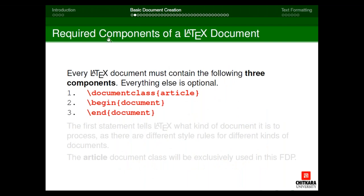There are three components essential for a LaTeX document. The first is \documentclass{article} — 'article' is the class for research documents throughout this FTP. The second is \begin{document}, and the third is \end{document}. Every LaTeX command starts with a backslash symbol. Whatever is mandatory must be enclosed in curly braces, and options go in square brackets.